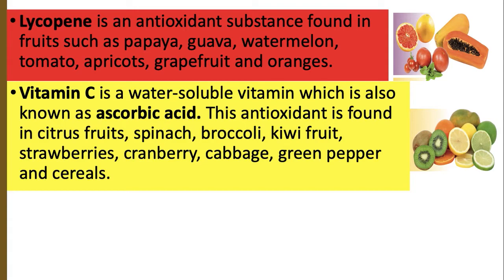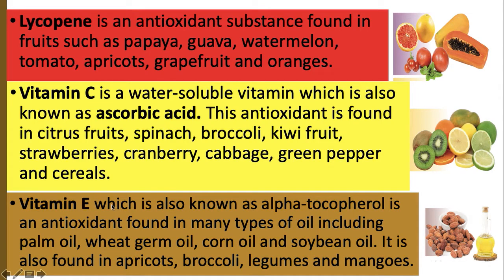Vitamin C is found in citrus fruits, spinach, broccoli, kiwi fruits, strawberries, cranberries, cabbage, green pepper, and cereals. Vitamin E, also known as alpha-tocopherol, is an antioxidant found in many types of oil including palm oil, wheat germ oil, corn oil, and soybean oil. It is also found in apricots, broccoli, legumes, and mangoes.